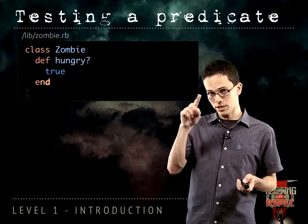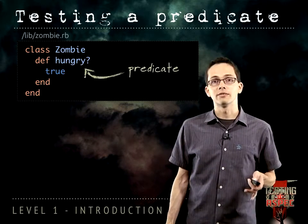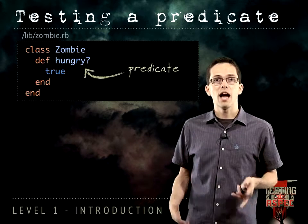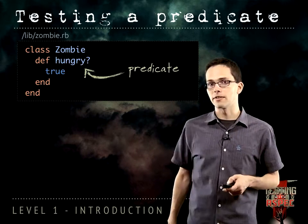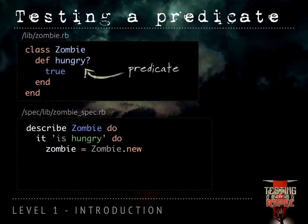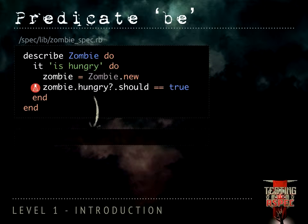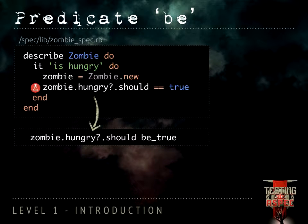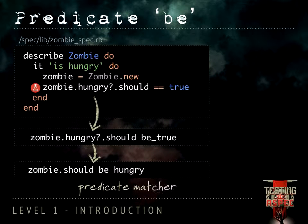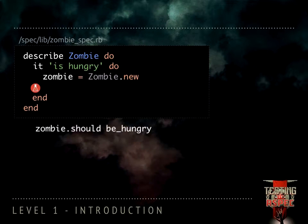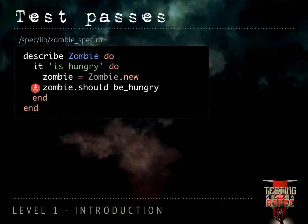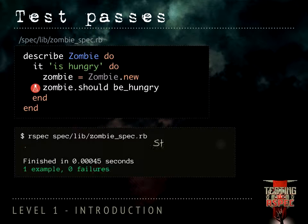In Ruby, occasionally you run into methods that end in a question mark — predicate methods that return true or false. How would we test this? We could write an example like zombie.hungry.should == true, however there's a better way. We can use the be_true matcher, but we can also use a predicate matcher which reads really well: zombie.should be_hungry — that's going to call the hungry? method on zombie and test it. If we run the spec again from the command line, it still passes.